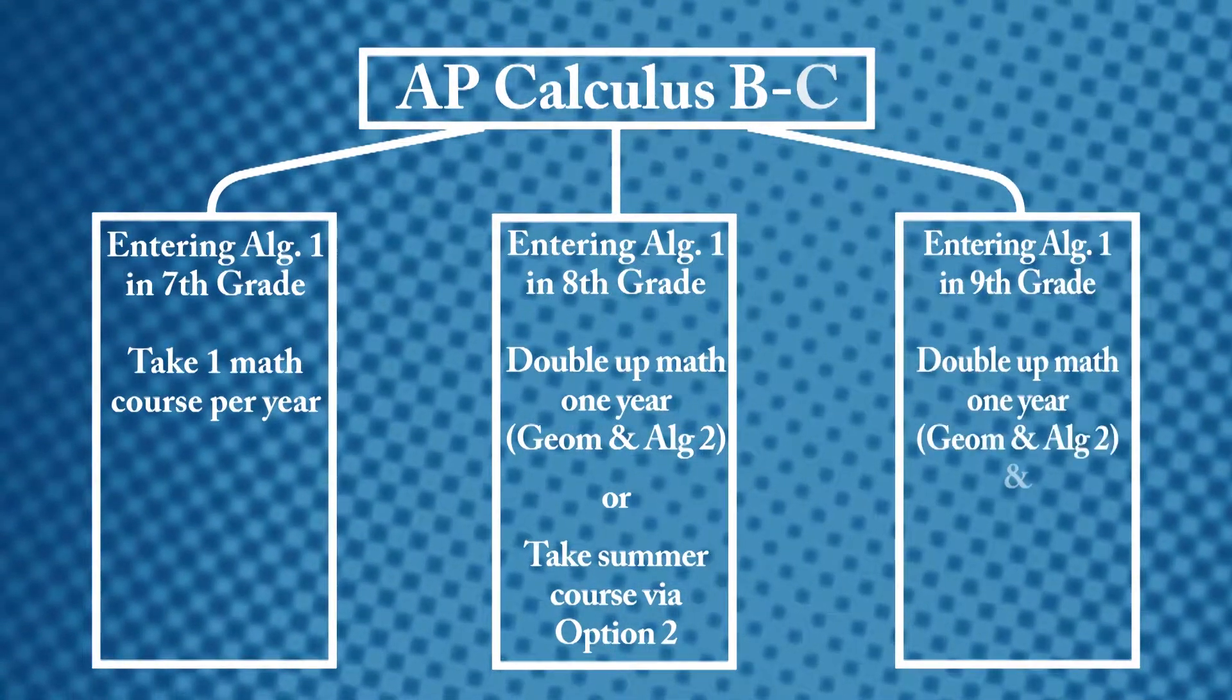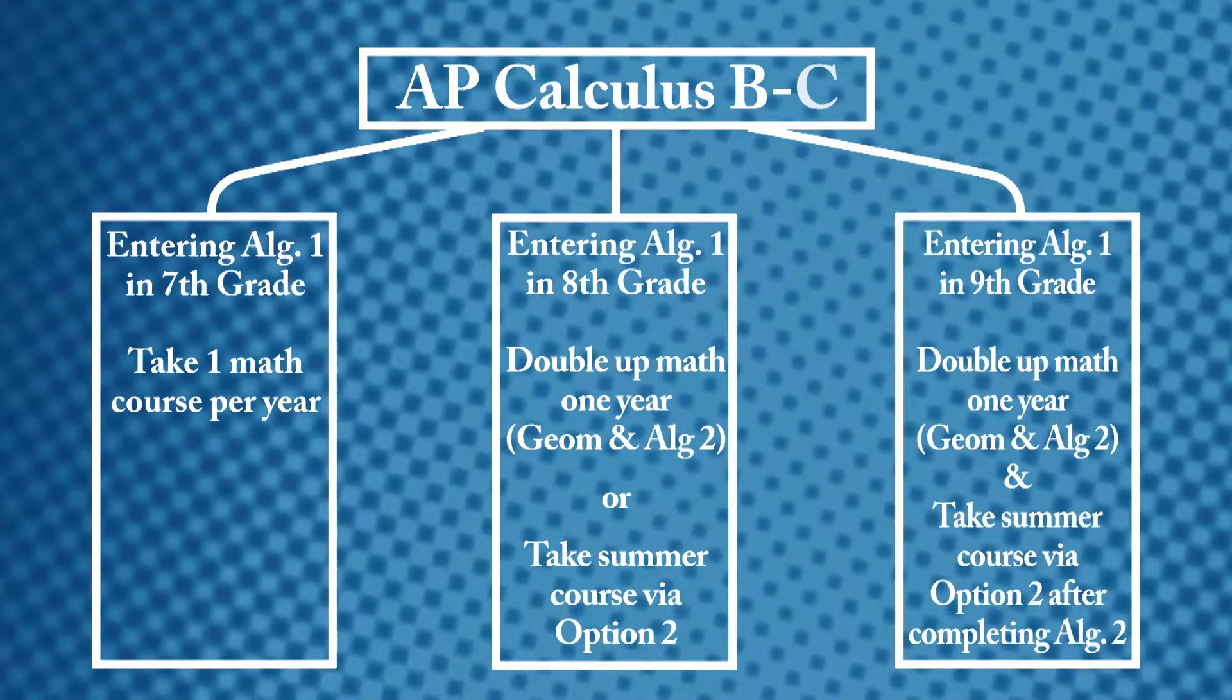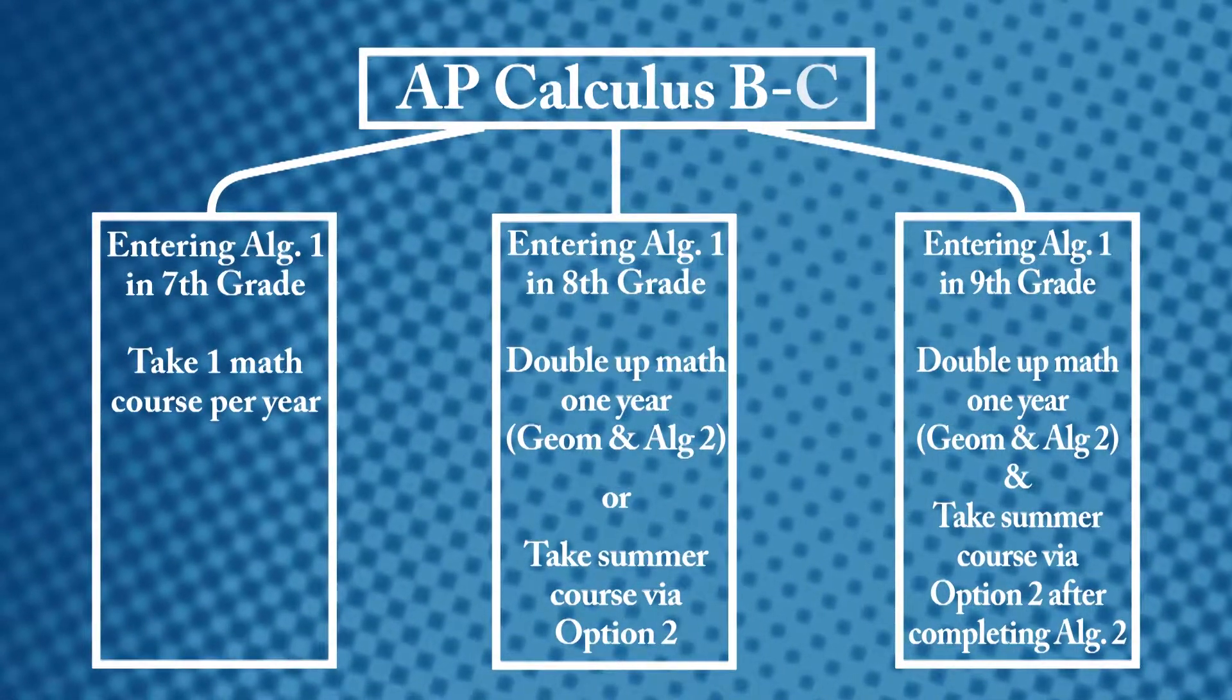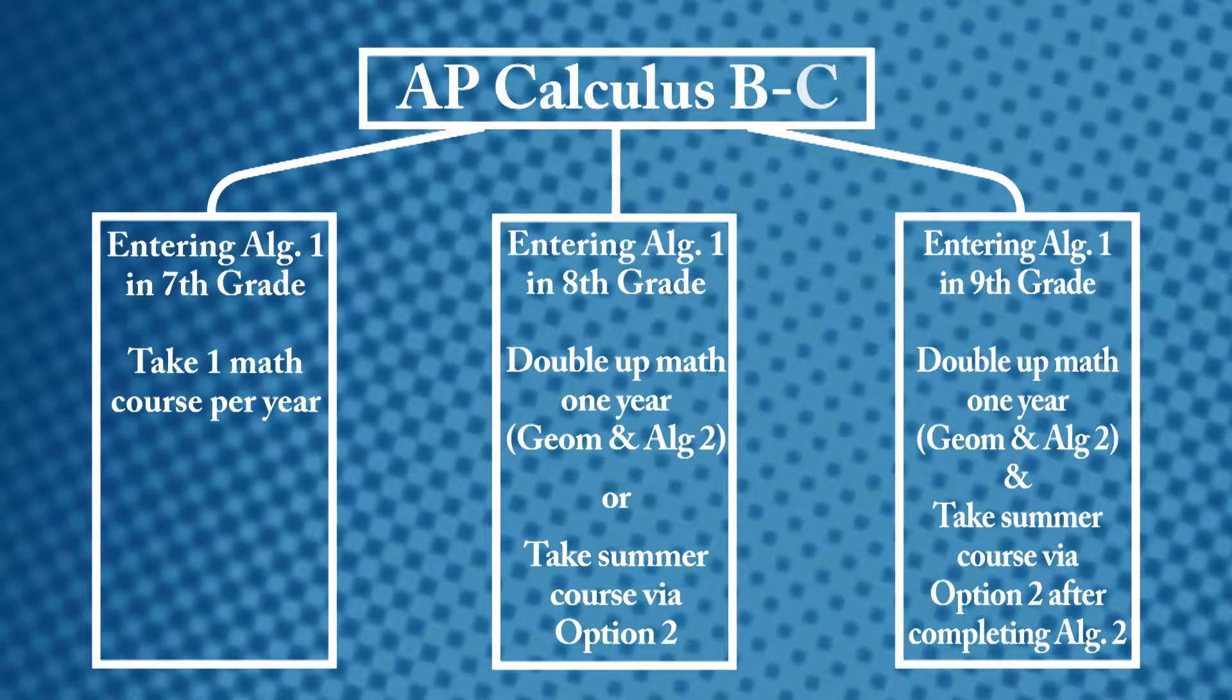Grade 9 Algebra students can also advance by doubling up Geometry and Algebra 2 as well as taking advantage of an Option 2 over the summer after the successful completion of Algebra 2.